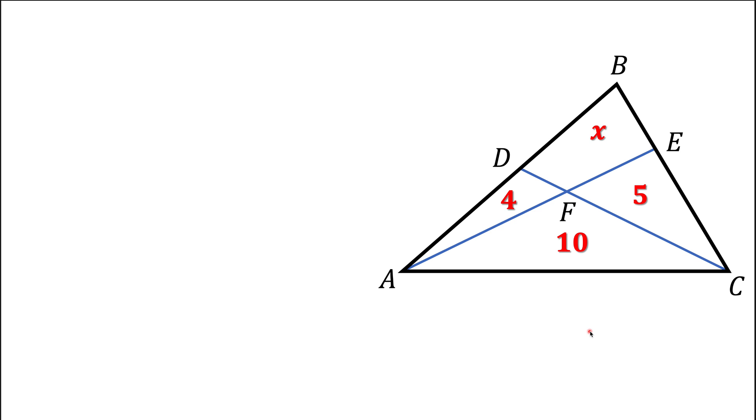Here we have a triangle that got split into four parts: three triangles and one quadrilateral. We know the areas of three smaller triangles and we are asked to find the area of the quadrilateral.